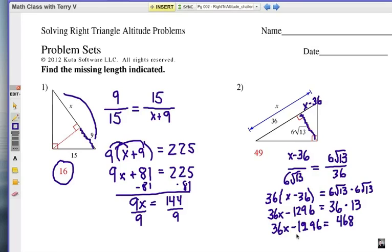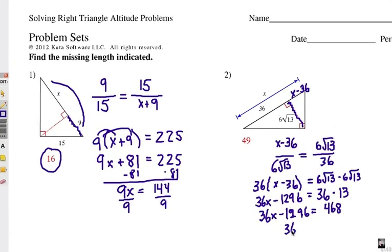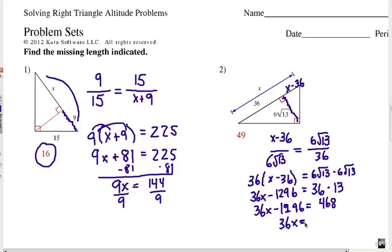Let's add 1296 to each side. So 36x equals 1764. Follow me on the calculator, hopefully. And then the last step, of course, is to divide by 36.